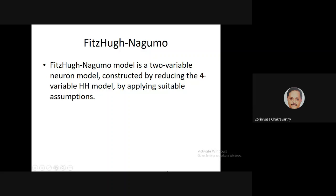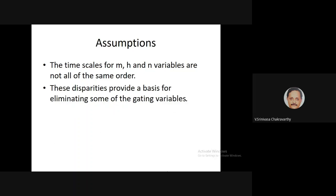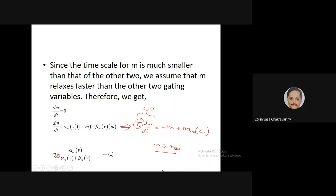Last class we began discussing the FitzHugh-Nagumo model. It's a two-variable neuron model constructed by reducing the four-variable Hodgkin-Huxley model. We took the Hodgkin-Huxley model and made two assumptions about the gating variables. We said m is a fast variable, therefore we assume that m quickly approaches the equilibrium value of m infinity.